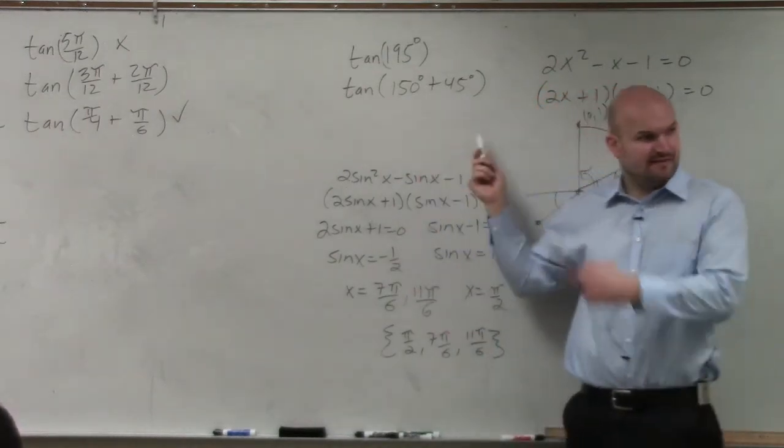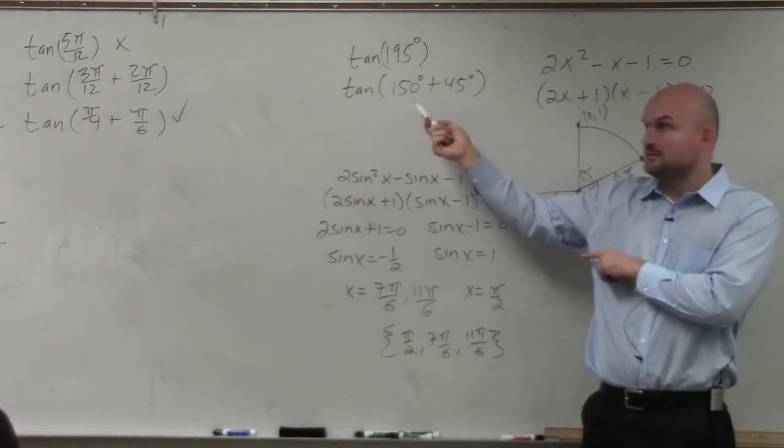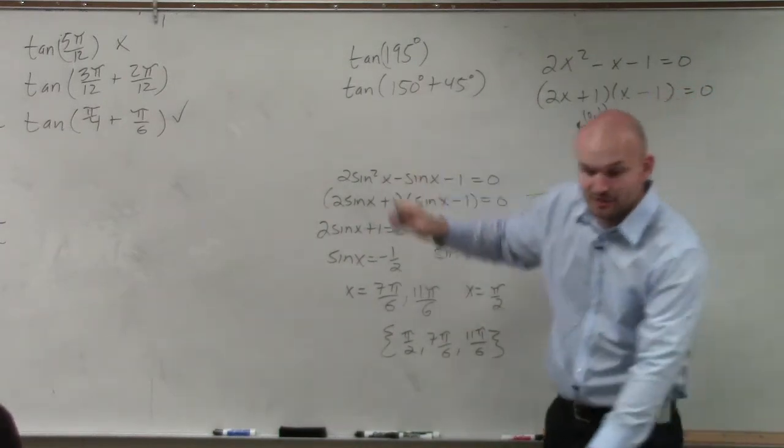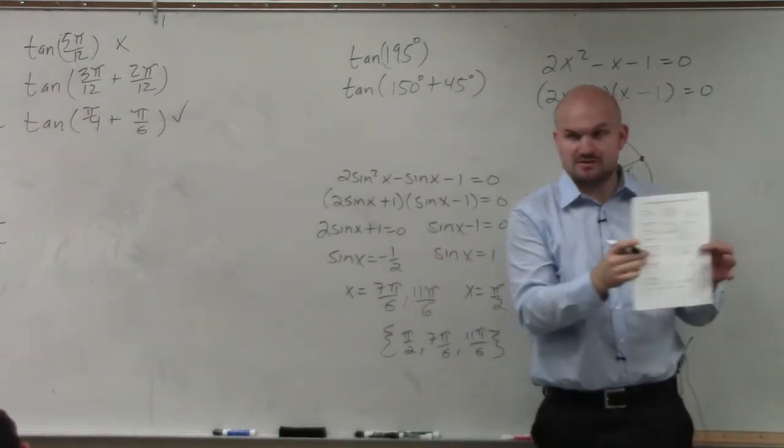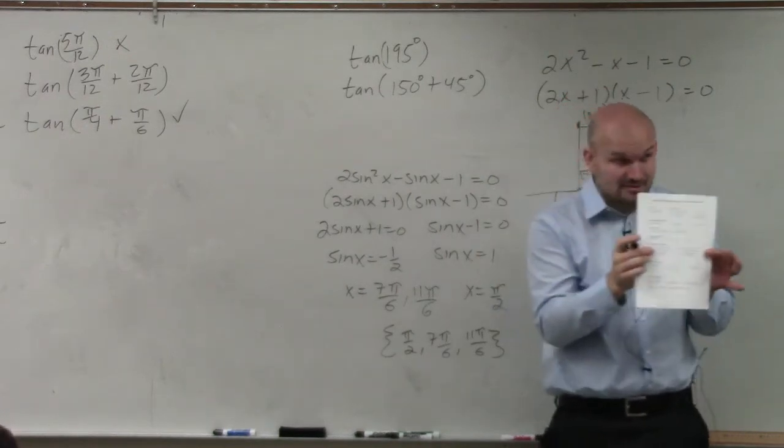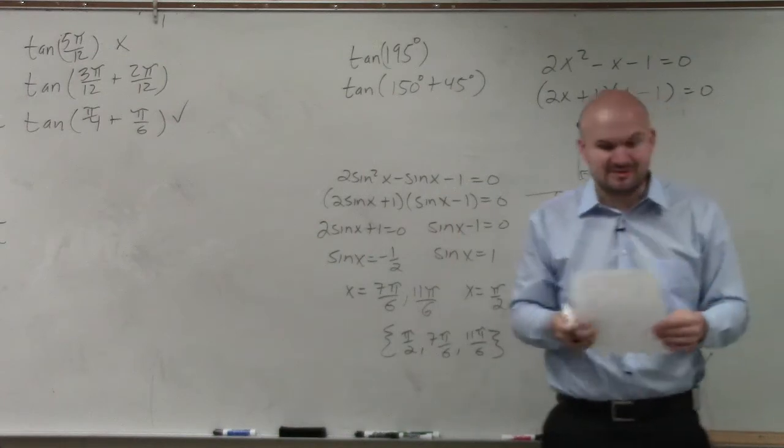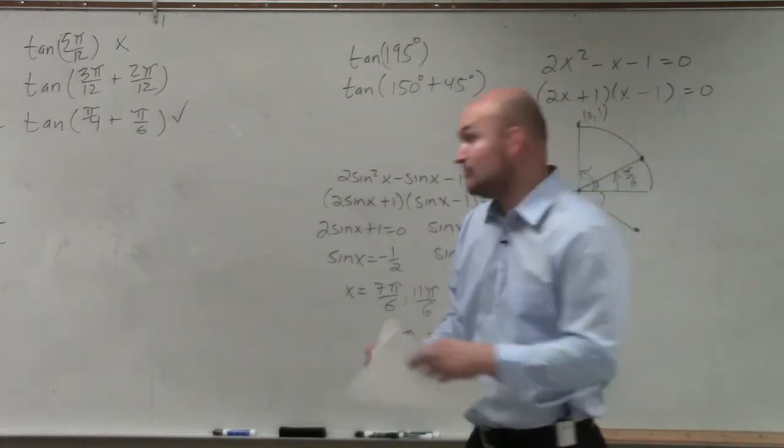Does 150 give us a point on the unit circle? Does 45 degrees give us a point on the unit circle? So you could theoretically use the sum and difference angles, right? But that was from last homework. I'm not asking you to use the sum and difference. I'm asking you to use the half angle formula.